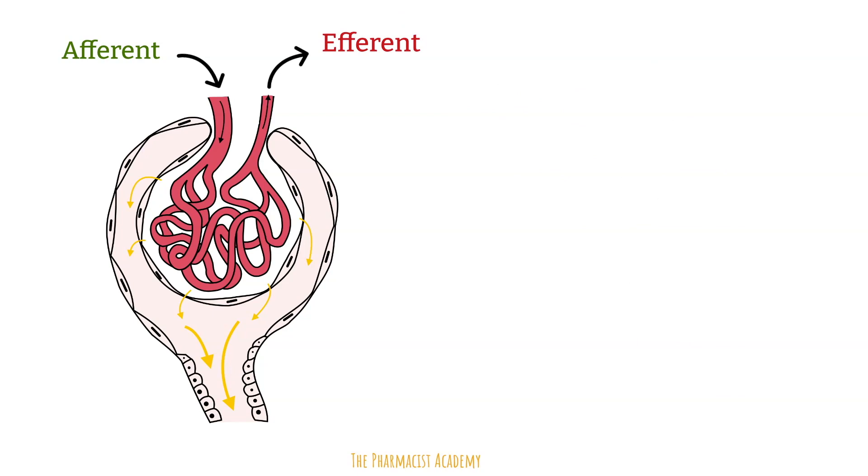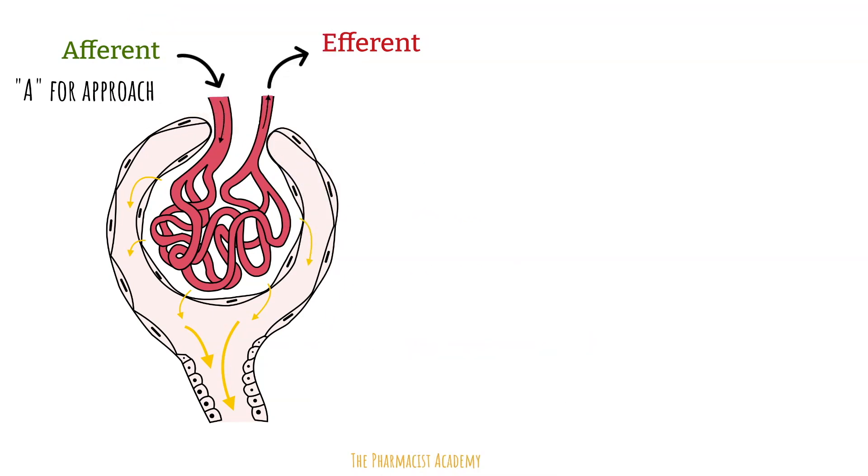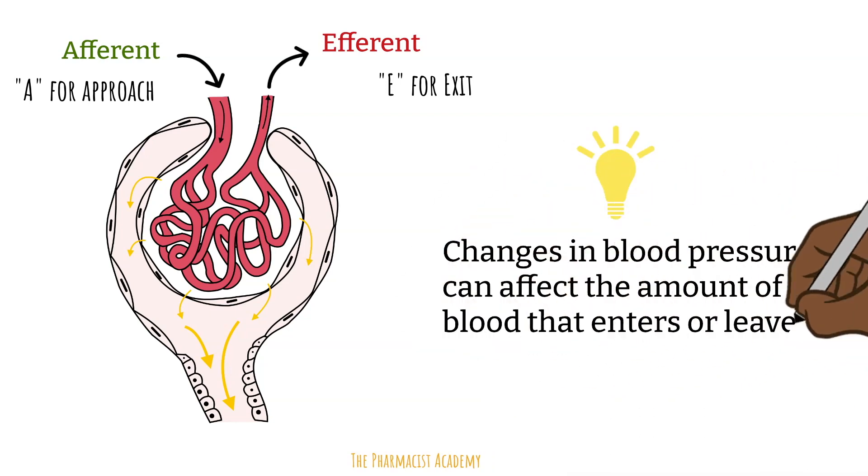Another way to remember is that the A in afferent is for approach and the E in efferent is for exit. Lastly, please keep in mind that changes in blood pressure can affect the amount of blood that enters or leaves the glomerulus. Let's briefly look at this.